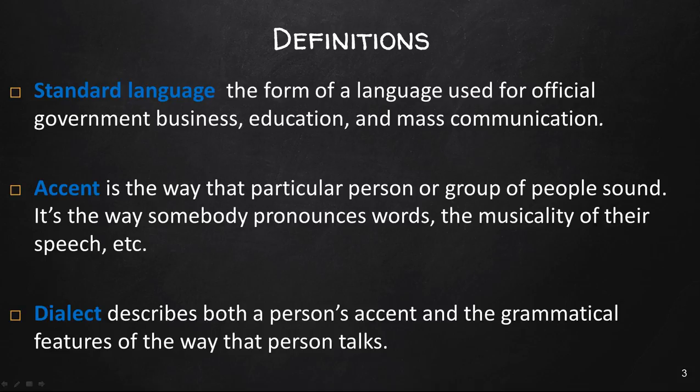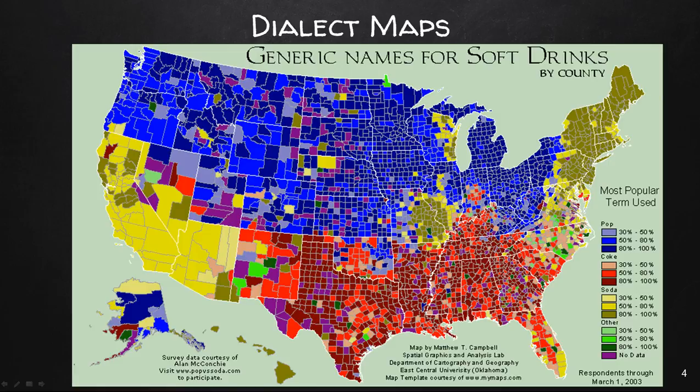Another example is pronouncing 'creek' versus 'crick' — I'm from southern California and I say creek, but people up here commonly say crick. One of the more common dialect maps is the generic name for soft drinks. I'm from California and we call all soft drinks 'soda.' When I visited Pennsylvania as a kid, everyone there called soft drinks 'pop' — the first time I heard it I had no idea what they were talking about. According to this map, about 50 to 80 percent of people in Ada County refer to soft drinks as pop, while in Blaine County about 50 to 80 percent refer to it as soda — possibly due to Californians moving to the Sun Valley area and bringing their dialect.